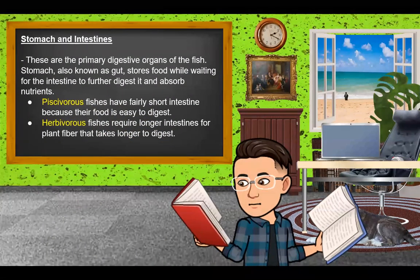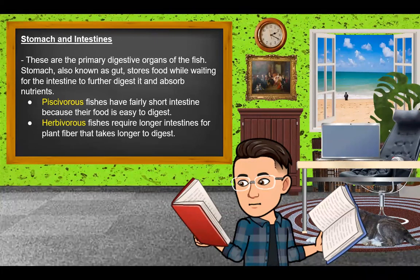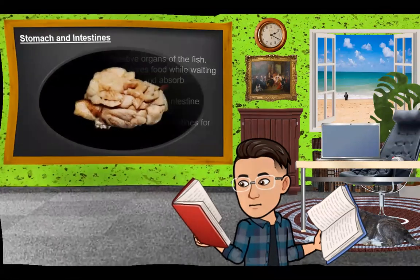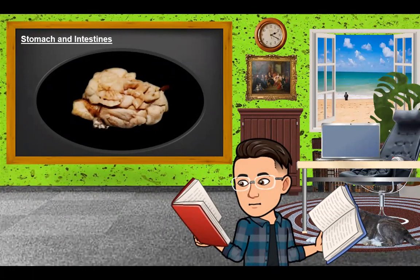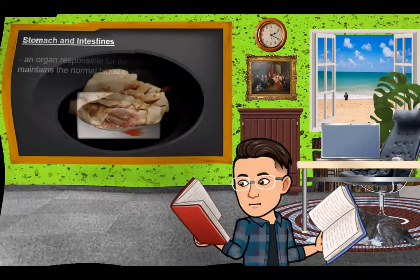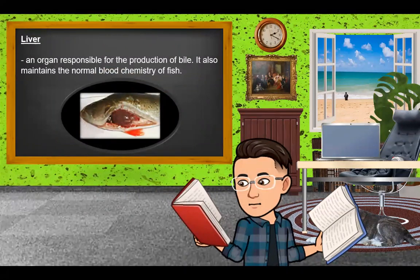Another internal part is the stomach and intestines, which are the primary digestive organs of the fish. The stomach, also known as the gut, stores food while waiting for the intestine to further digest it and absorb nutrients. Piscivorous fishes have a fairly short intestine because their food is easy to digest, while herbivorous fishes require longer intestines since plant fiber takes longer to digest. The liver is an organ responsible for the production of bile and also maintains the normal blood chemistry of the fish.